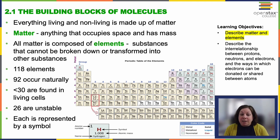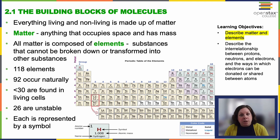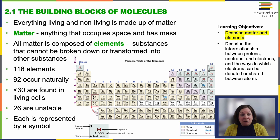There are a total of 118 elements that have been identified. Only 92 occur naturally, and fewer than 30 are typically found in living organisms. That remaining 26 are unstable, made in the lab usually, or some of them are just theoretical. They don't last very long and they decay down into smaller things quickly.